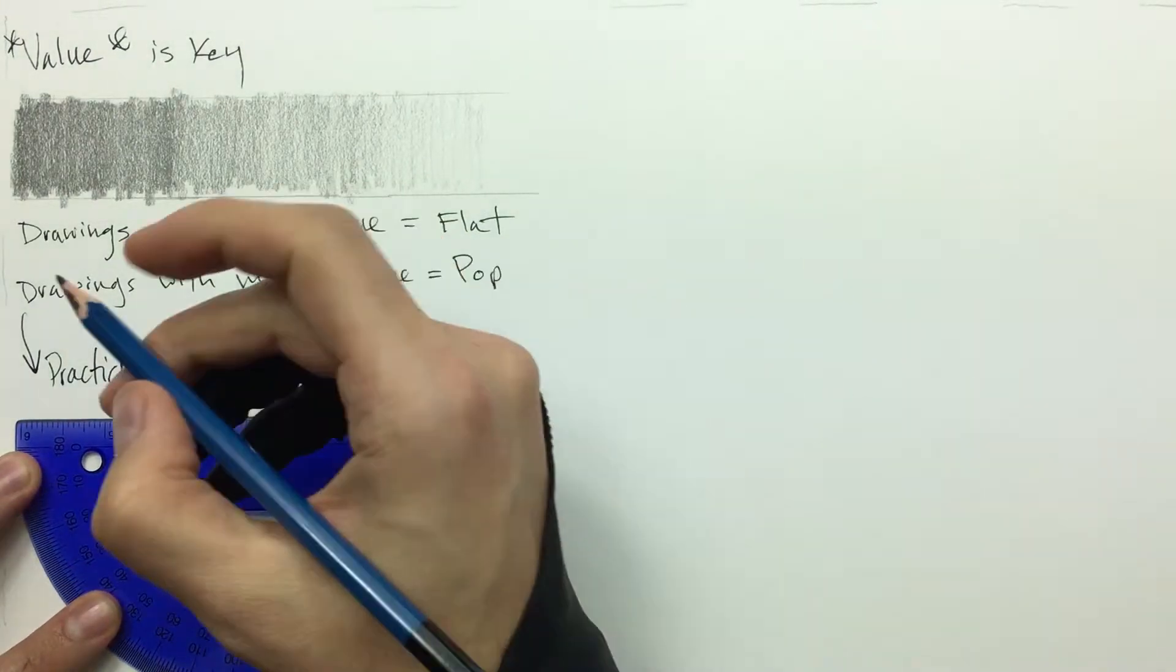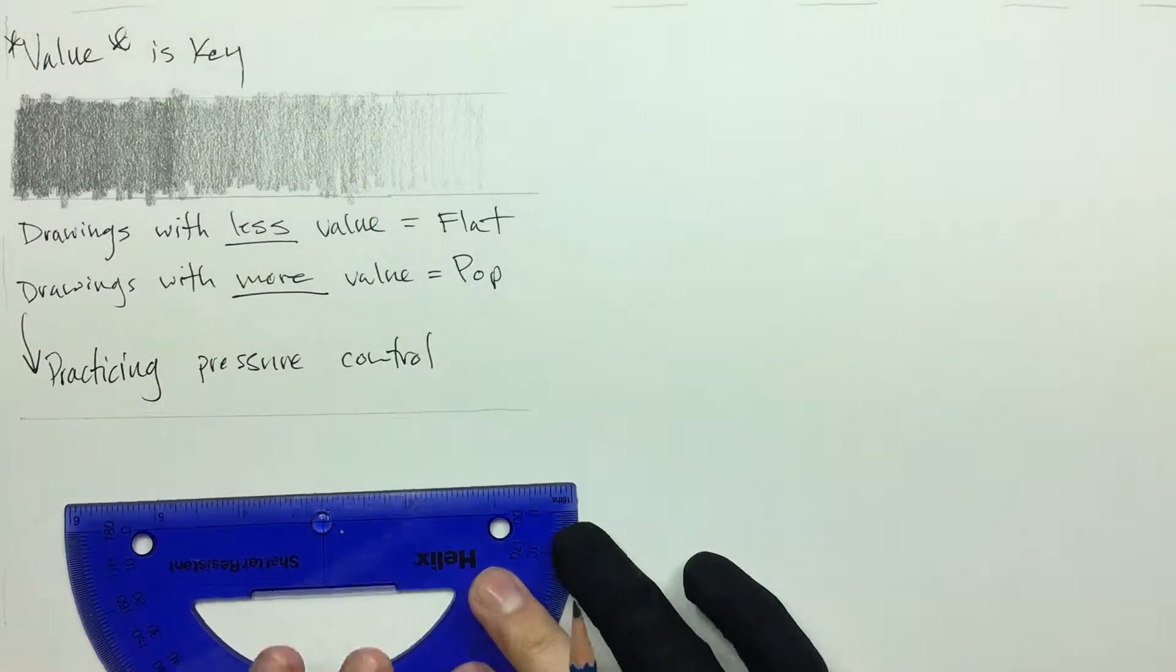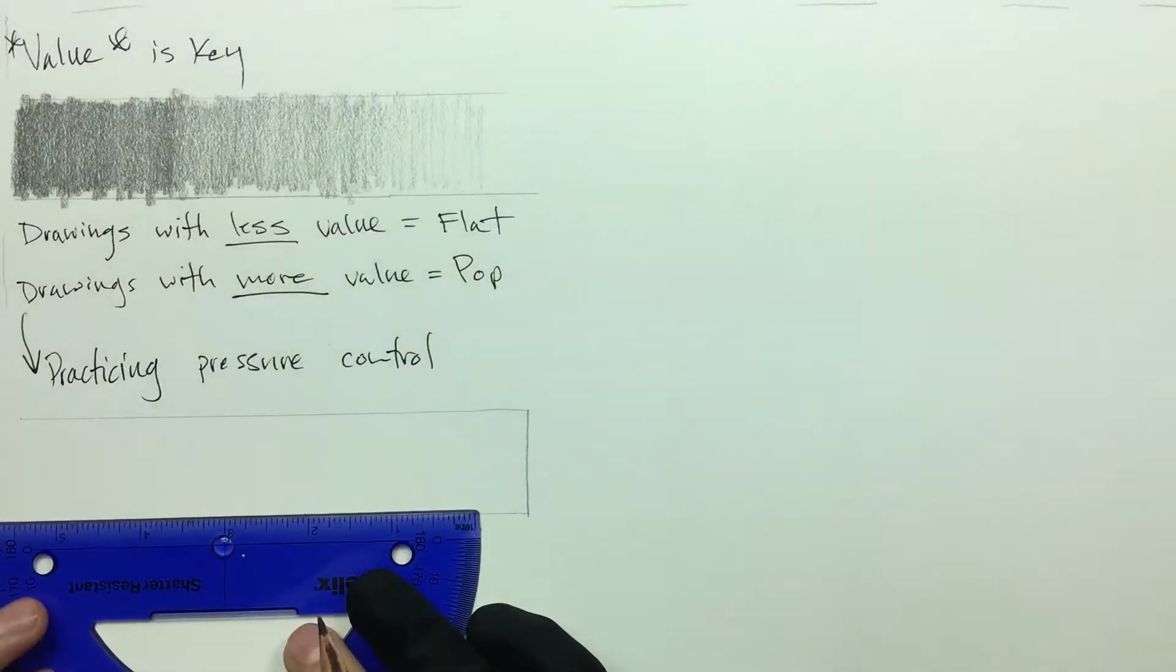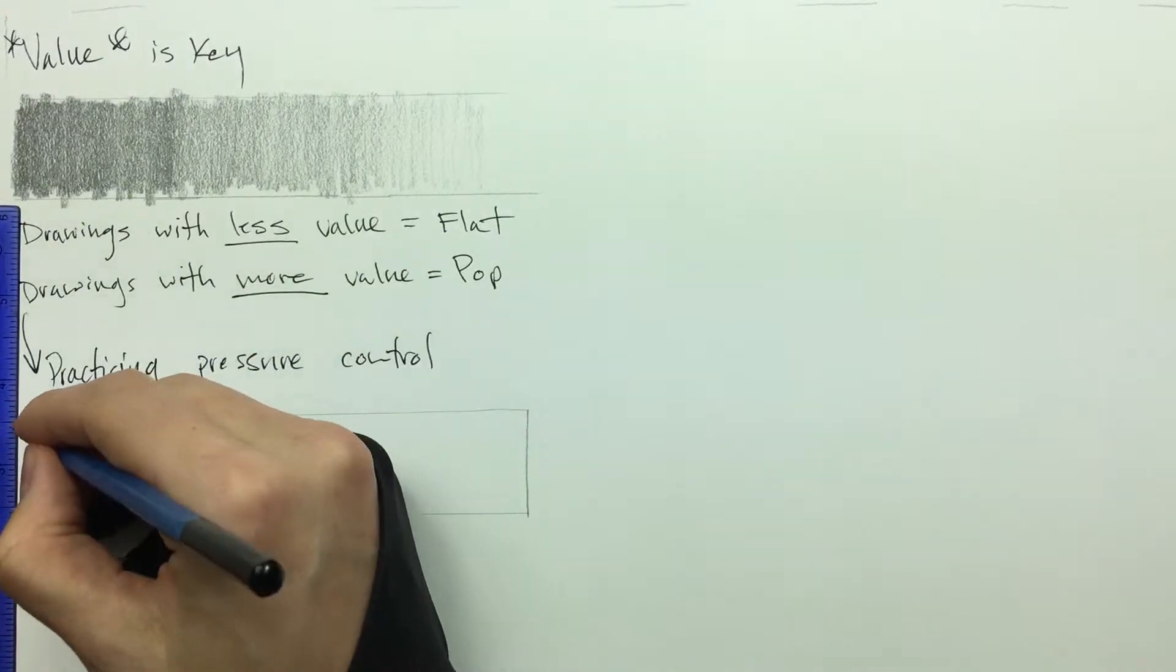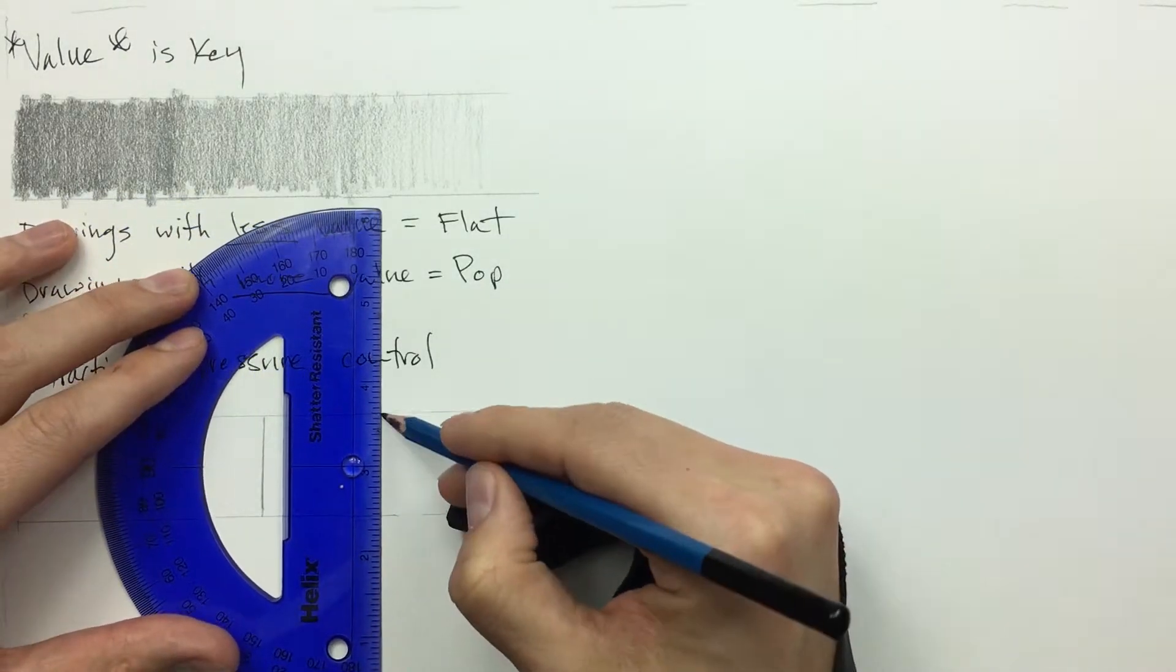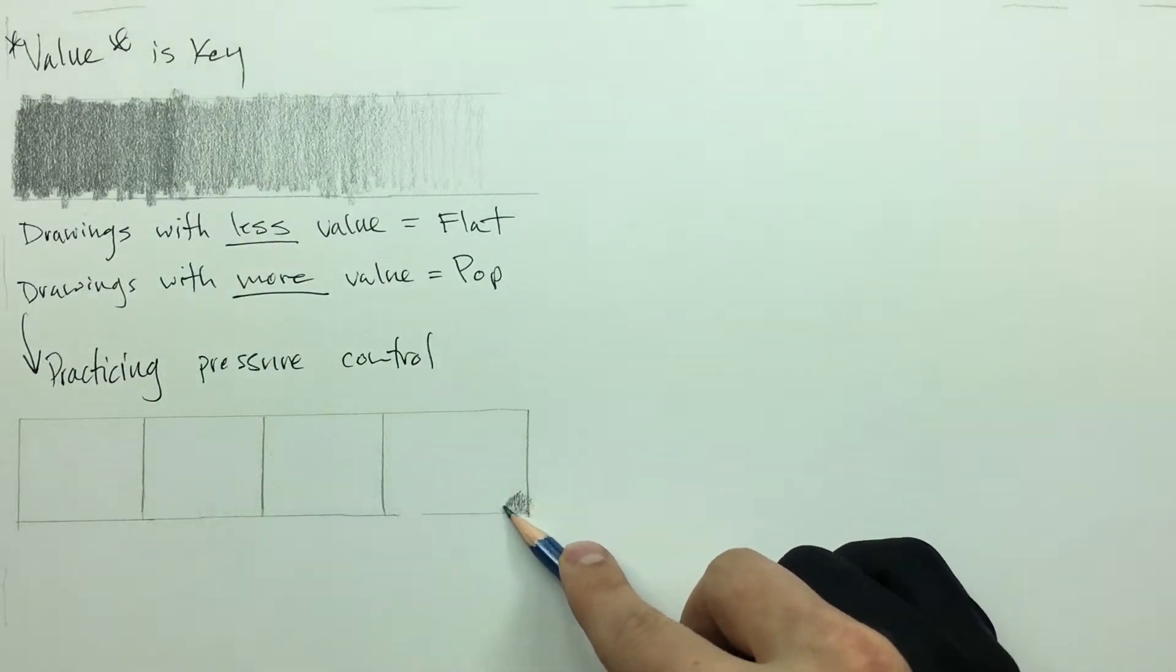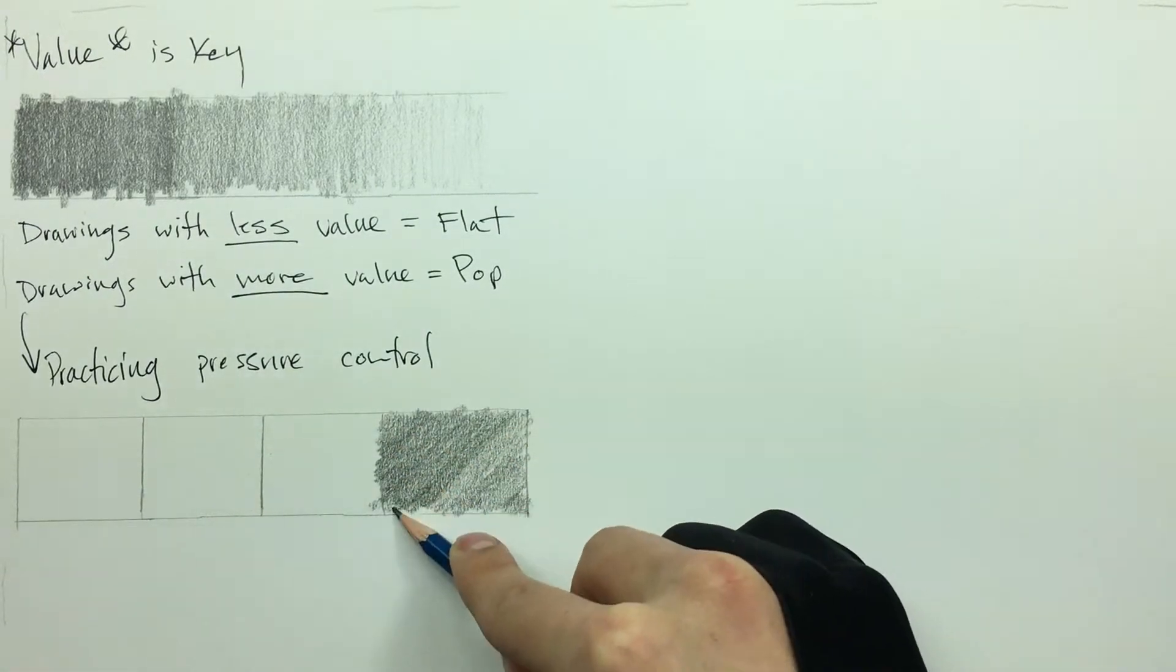When it comes to this it's really personal preference depending on how many different shades of value you wish to put in your drawing. For the sake of this video I'm just going to do four different shades. The first shade is going to be extremely dark so I'm going to press extremely hard onto the paper and really bring out the darkest value that I can.